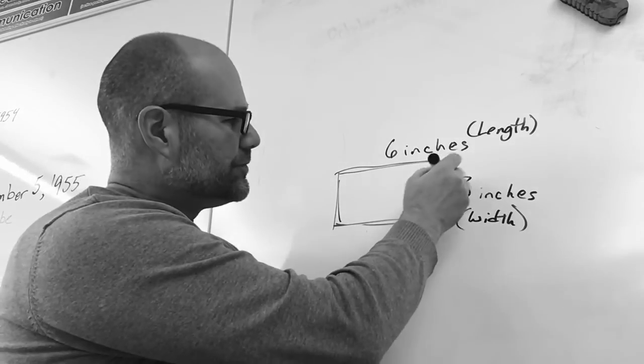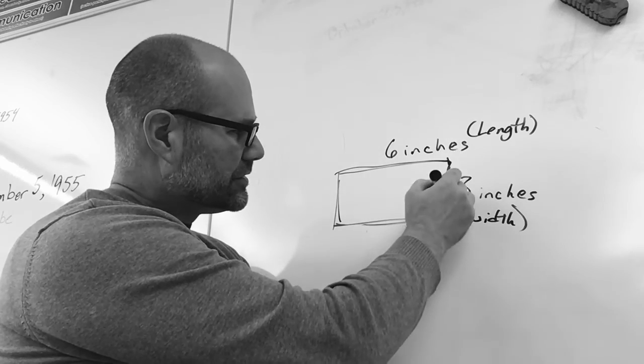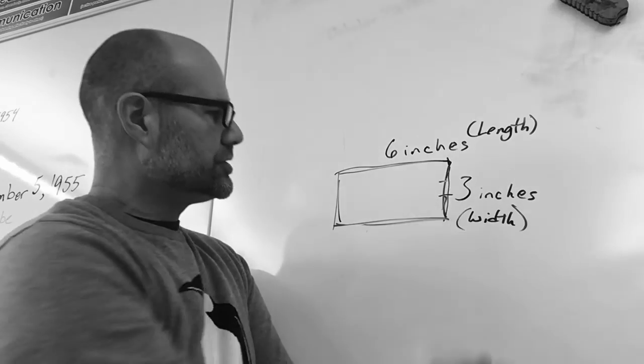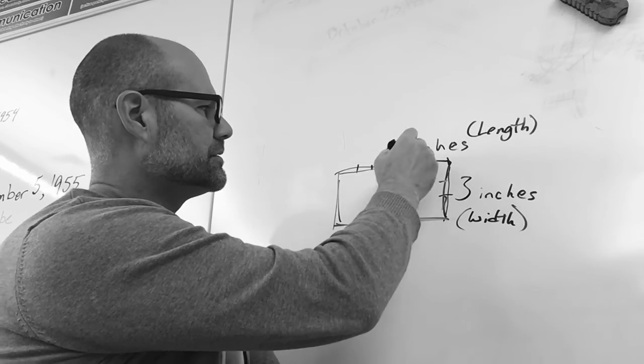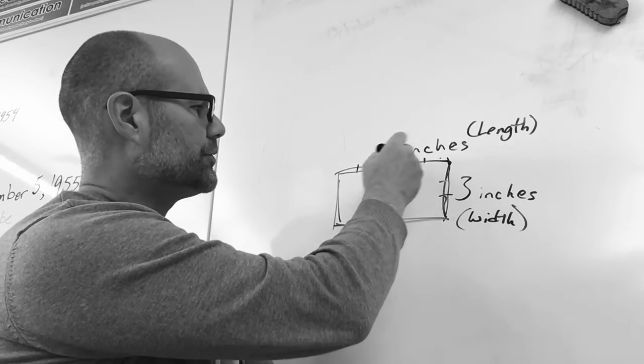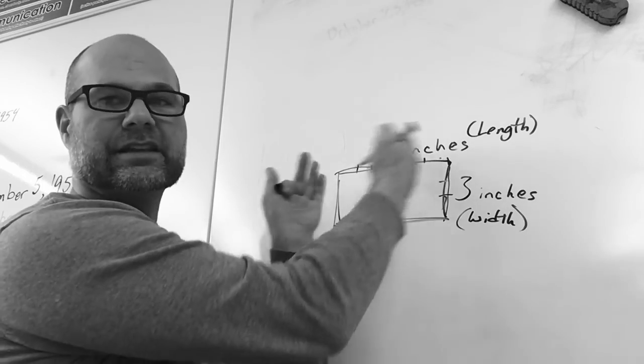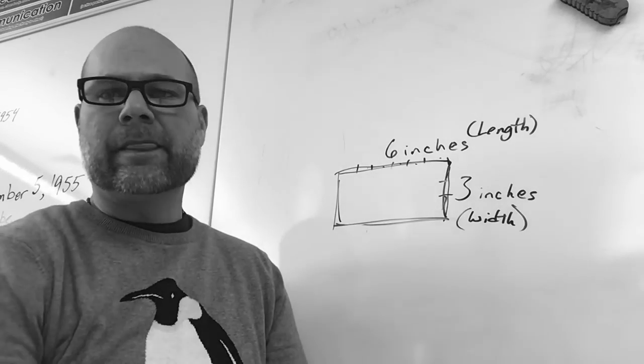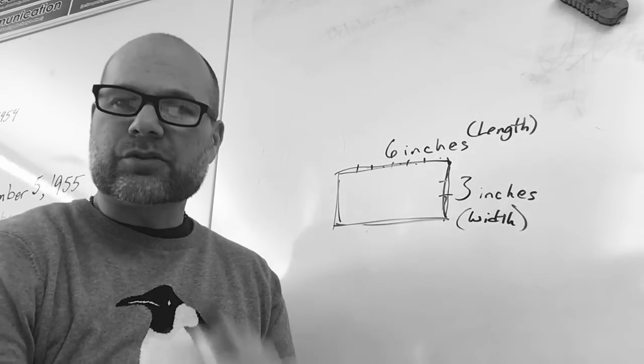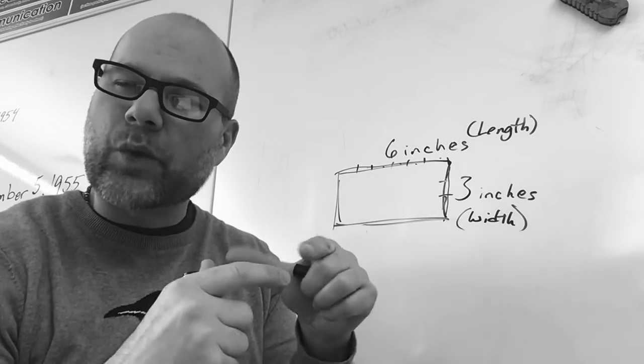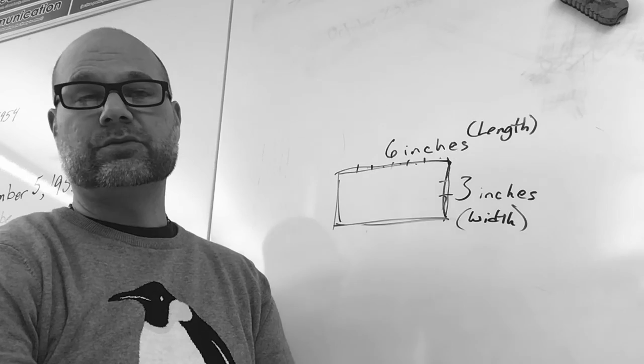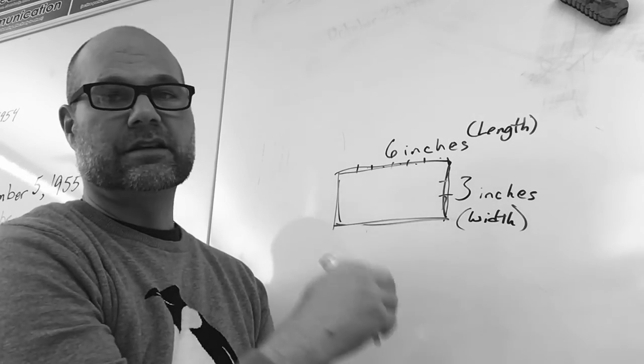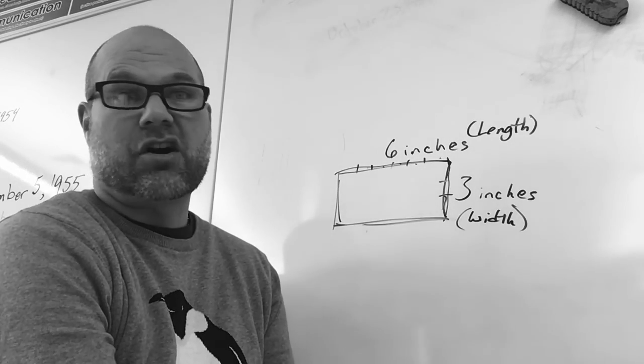That means that you've measured, this is 1 inch, here's a 2nd inch and a 3rd inch, and then along here you would have 6 inches. 1, 2, 3, 4, 5, 6. You measured it and there's 6 inches. Well, the area, we're looking for how many squares can fit inside of there.